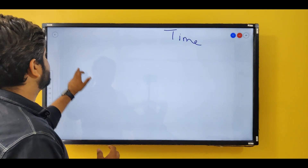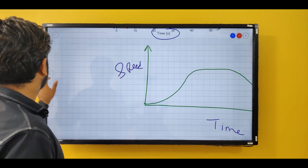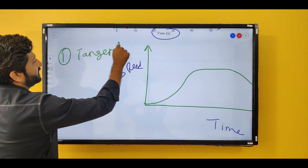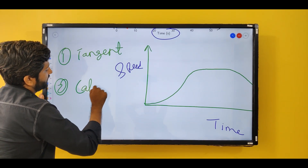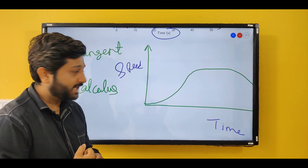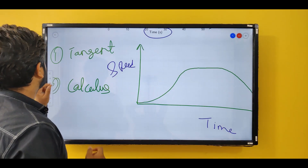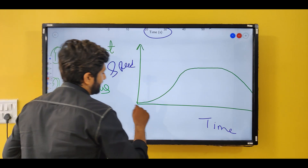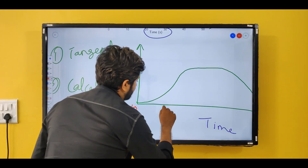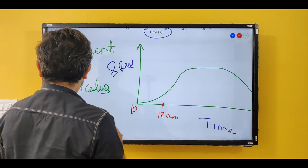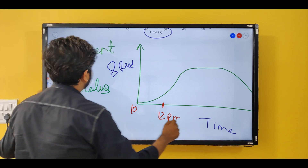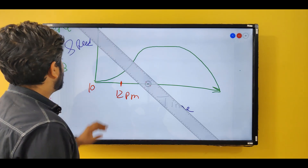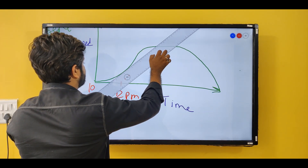There are two different ways to find acceleration in such a curved graph. The first way is by drawing a tangent, and the second way is by the use of calculus. Let's try the first way — drawing a tangent. Assuming I'm leaving my house at 10 a.m. and this ends at 12 p.m., I want to find my acceleration at 12 p.m.